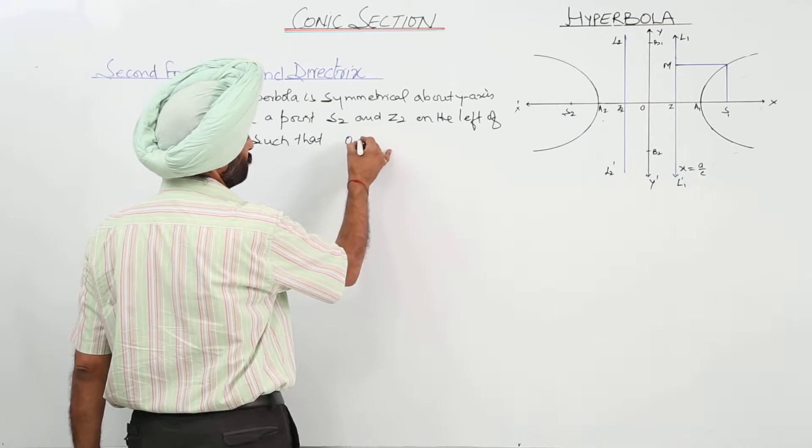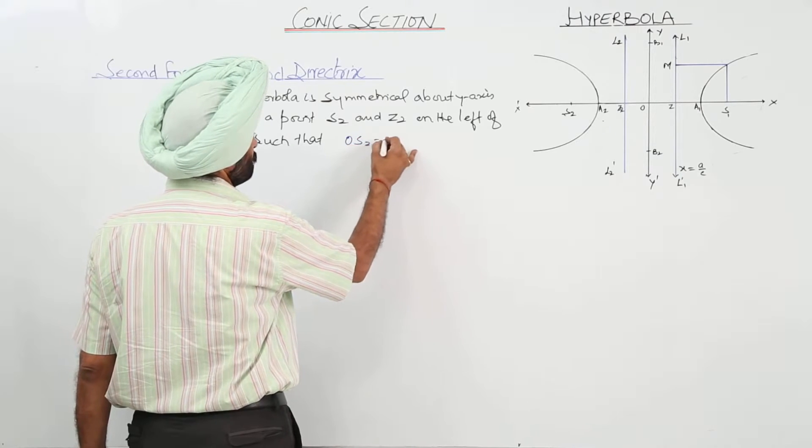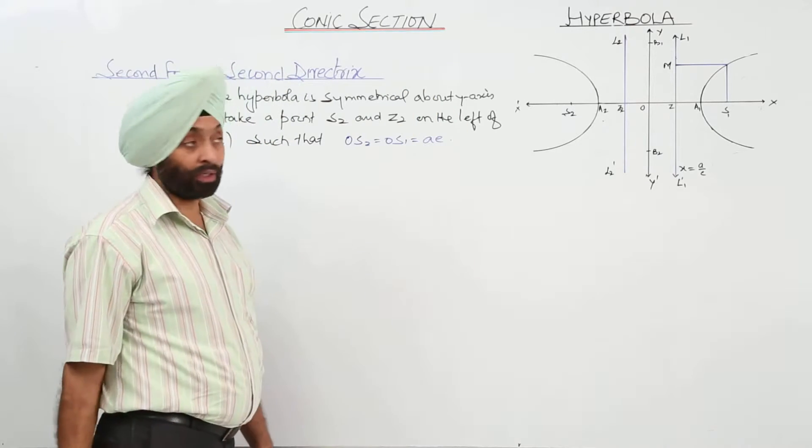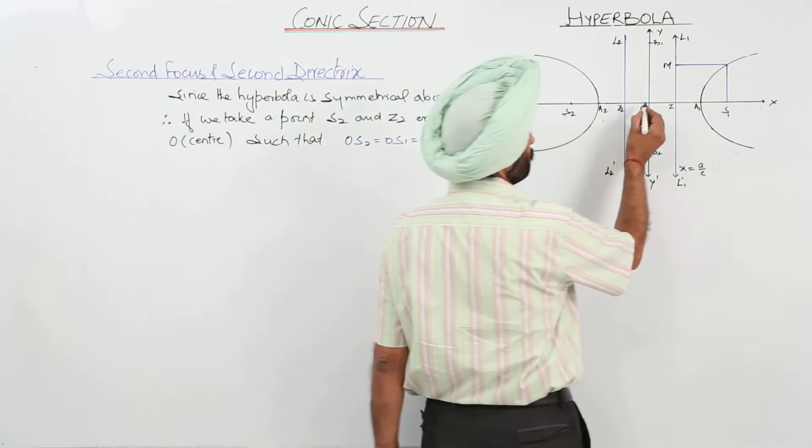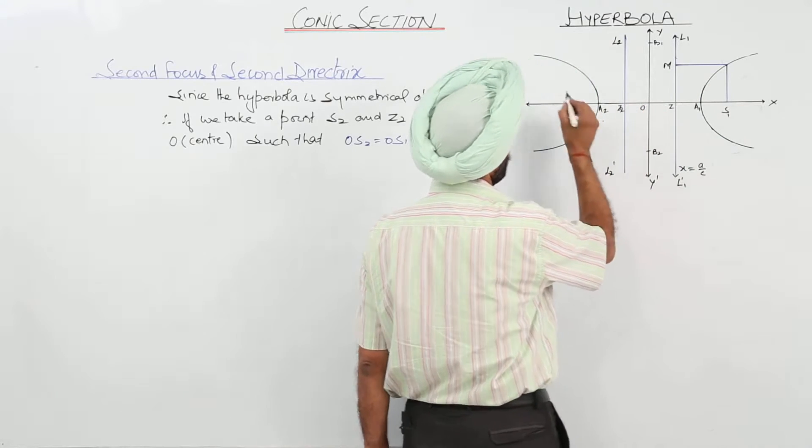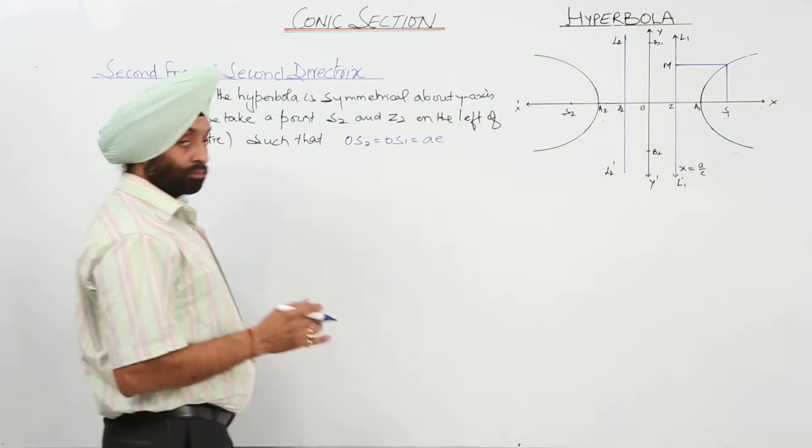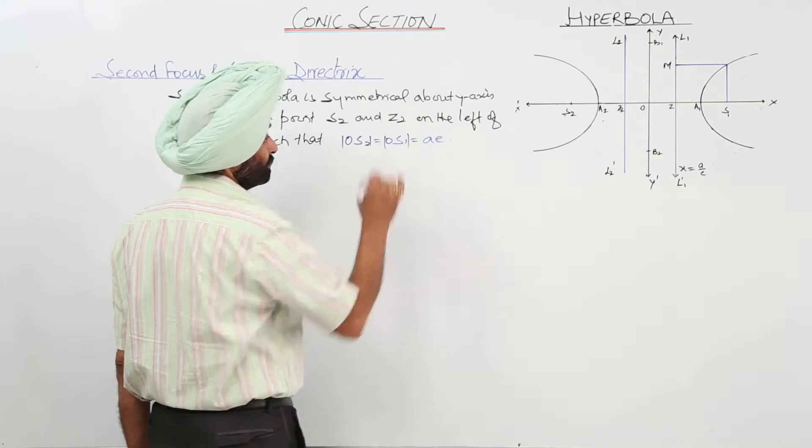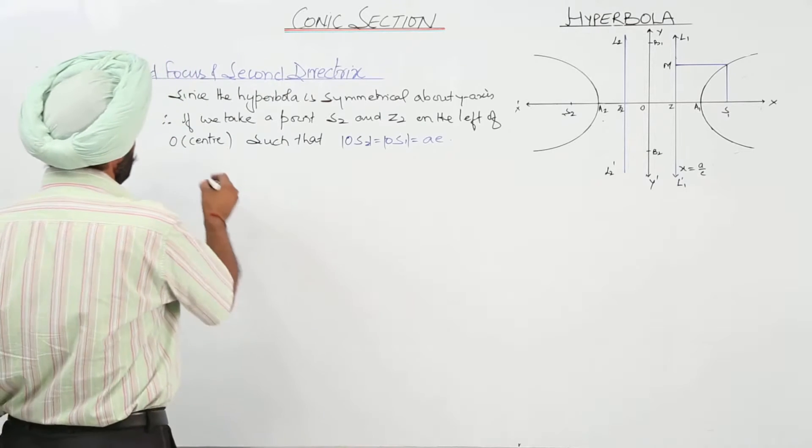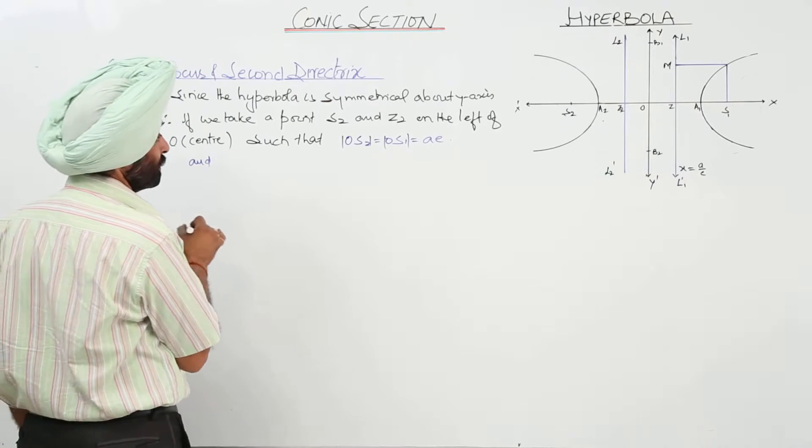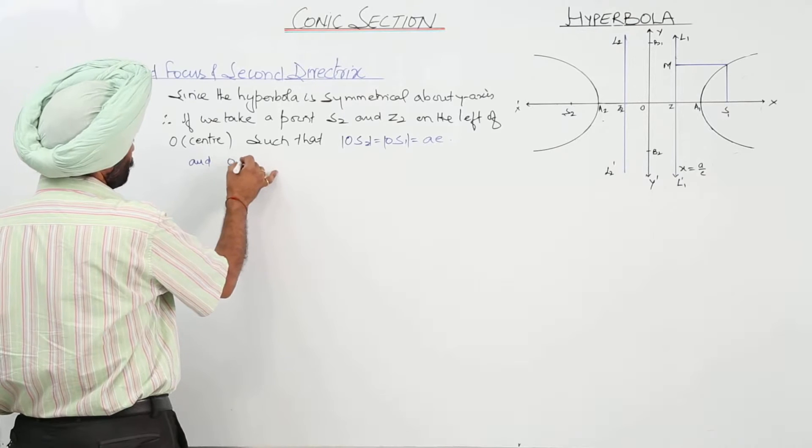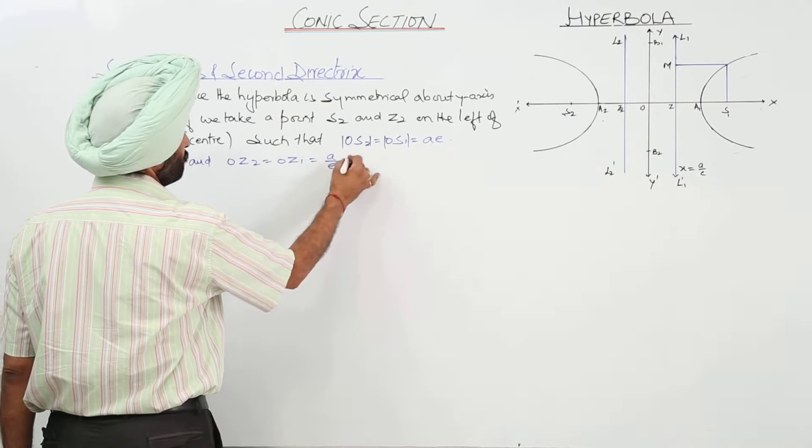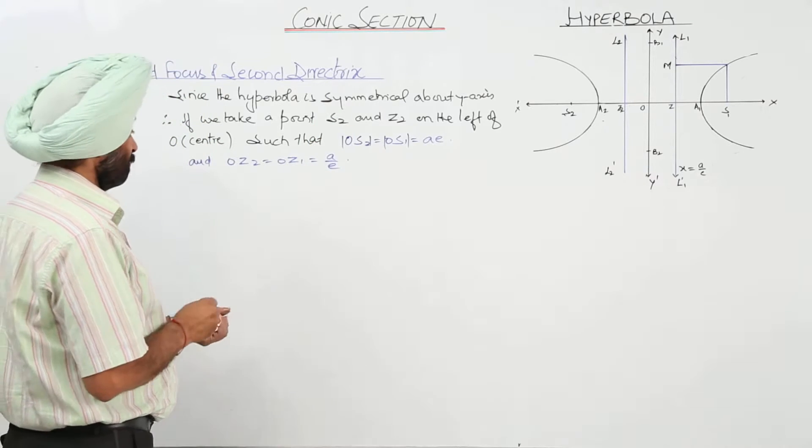The left of O such that OS2 is equal to OS1 is equal to AE. So O was the origin. Now, from O to S1 and O to S2, we are having distance we are taking, so it will be positive. Is it clear? And after this one, OZ2 is equal to OZ1 is equal to A upon E.